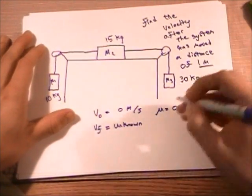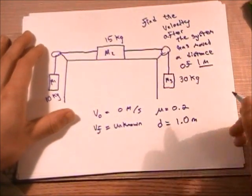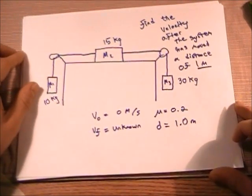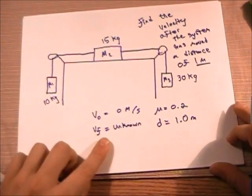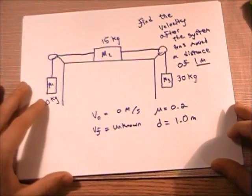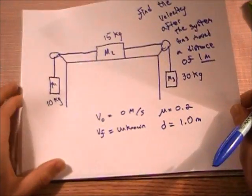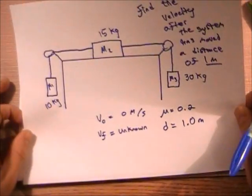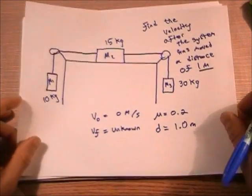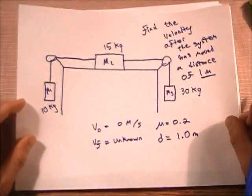We're given a distance of 1.0 meters. Looking at our system, we basically only have one unknown, which is our velocity. Ordinarily, you'd draw a free body diagram for each of the different masses, solve for your tension, solve for your acceleration, and then finally solve for your velocity. But what we're going to do is solve this system using conservation of energy.